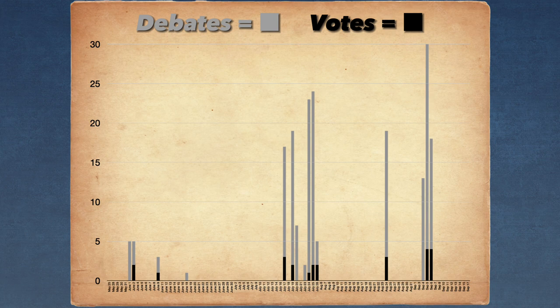The gray data points show debate mentions, while the black shows votes held on various methods. Early debates on how to choose the president were more suggestive and exploratory.